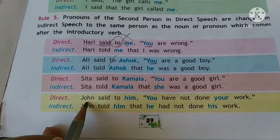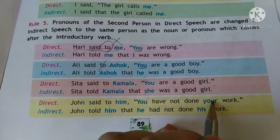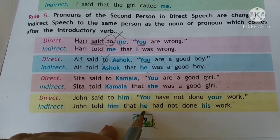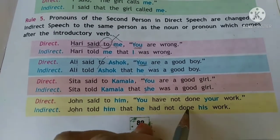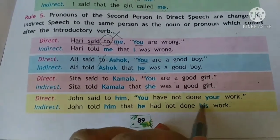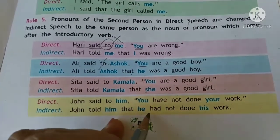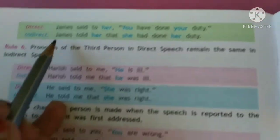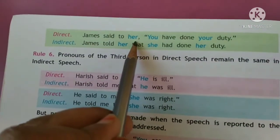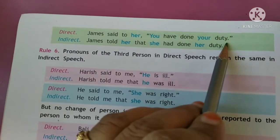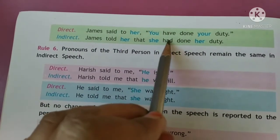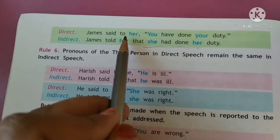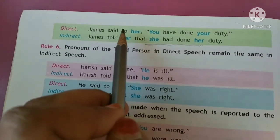John said to him, 'You have not done your work.' In indirect: John told him that he had not done his work — 'him' is a boy, so 'you' becomes 'he', 'have' becomes 'had', and 'your work' becomes 'his work'. James said to her, 'You have done your duty.' In indirect: James told her that she had done her duty.